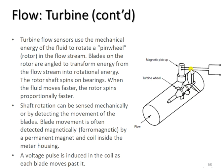Shaft rotation can be sensed mechanically or by detecting the movement of the blades. Blade movement is often detected magnetically by a permanent magnet and coil inside the meter housing.